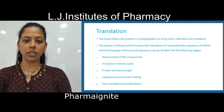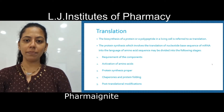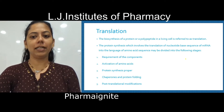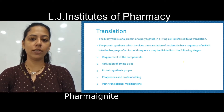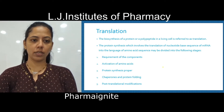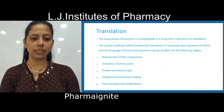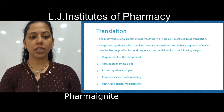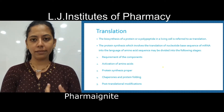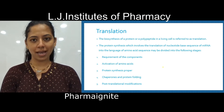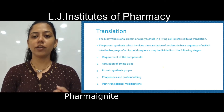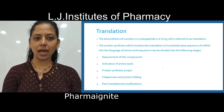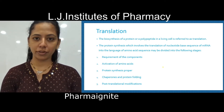Biosynthesis of protein or a polypeptide chain in a living cell is referred to as the translation process. The whole translation process involves five different steps: requirement gathering, activation of amino acid, actual protein synthesis, protein folding, and post-translation modification.